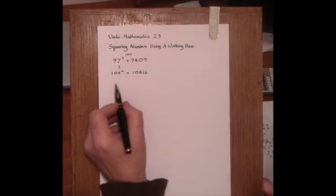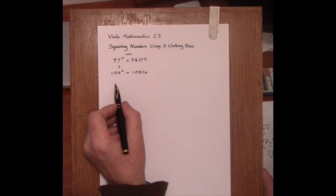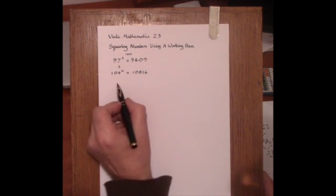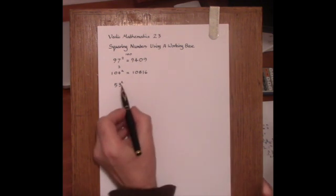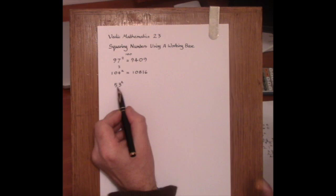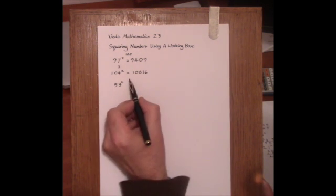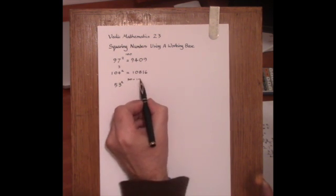Now when we come to a working base this involves the proportionately sub rule, so let's have a look at that. We'll take 53 squared as the first example. We're going to relate this to 50. 50 is the working base and we'll take it as 100 divided by 2.